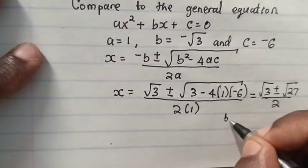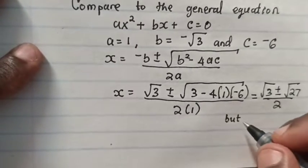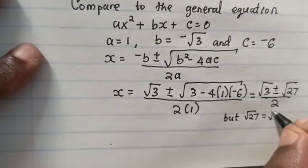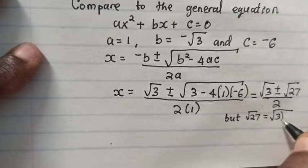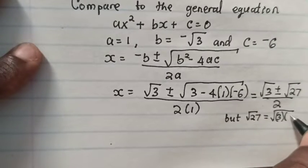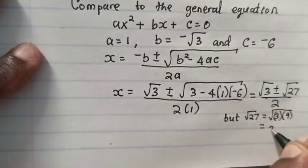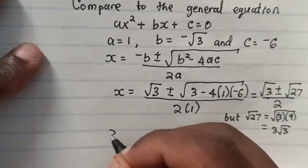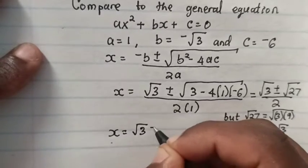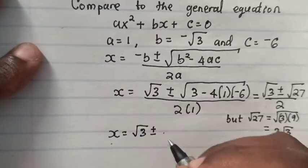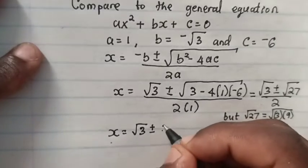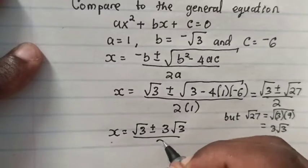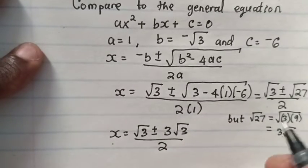Now, √27 equals √(9 times 3). √9 is 3, so 3 comes out of the square root giving 3√3. We substitute that value, so x equals √3 plus or minus 3√3, all divided by 2.